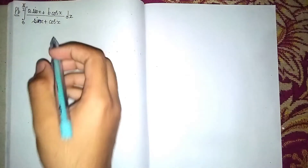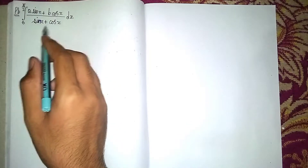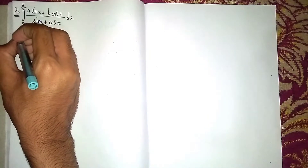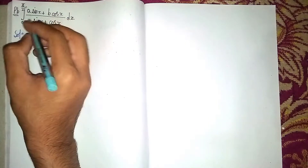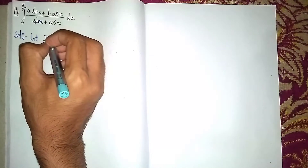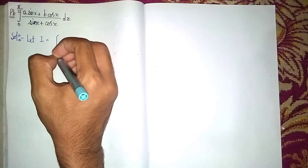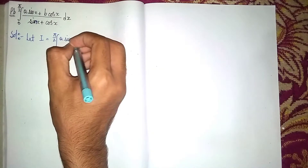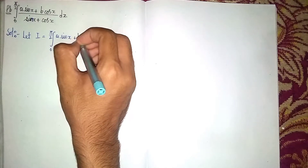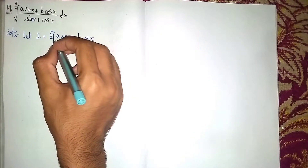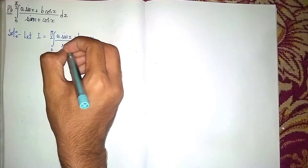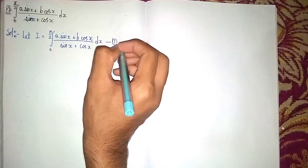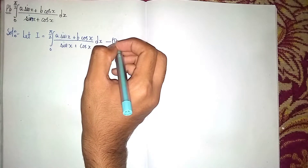Hello, welcome back to my channel. The question is to integrate (a·sin x + b·cos x)/(sin x + cos x) with limits 0 to π/2. Let I equal the integral with limits π/2 and 0 of (a·sin x + b·cos x)/(sin x + cos x) dx. Take this as equation one.